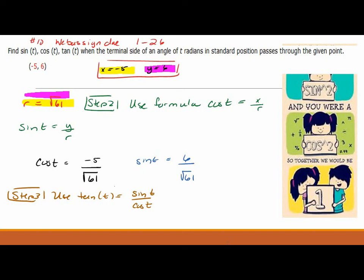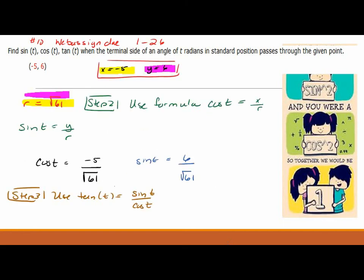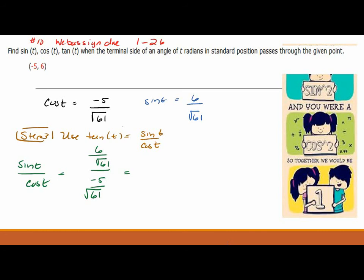So, tangent t is sine over cosine, or you can do y over x. It doesn't matter. Copied and pasted, so I didn't lose anything. I just moved this up. So you're still looking at the same slide. The sine was 6 over square root of 61. The cosine is minus 5 over square root of 61. What do you do when you have a fraction over a fraction? Invert the denominator and multiply. You're getting it.